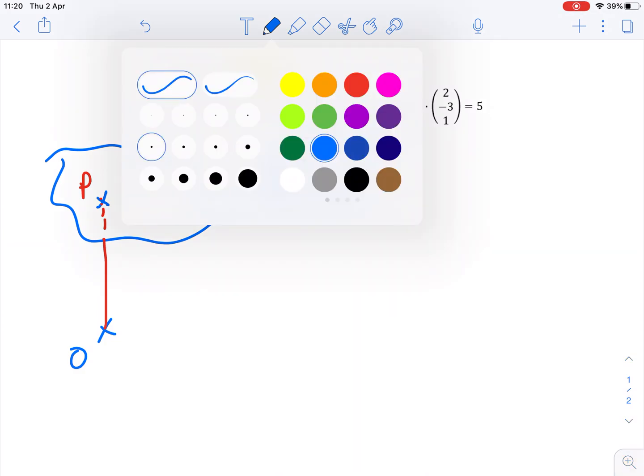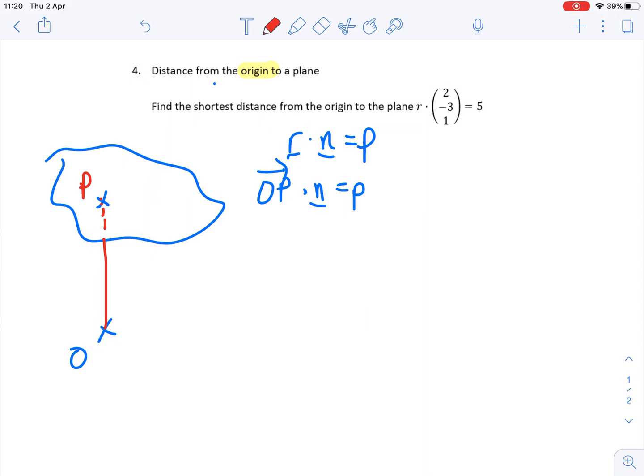So the movement from the origin up to this point here must be a multiple of the normal vector, because the normal vector is definitely running in that direction. So we can call the vector O to P lambda, the unknown multiple, lots of the normal vector to the plane.